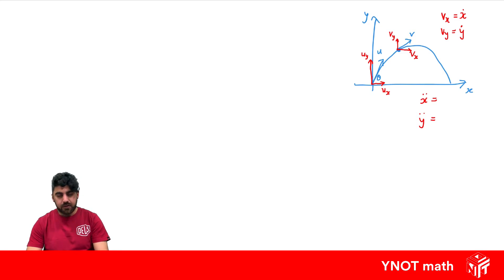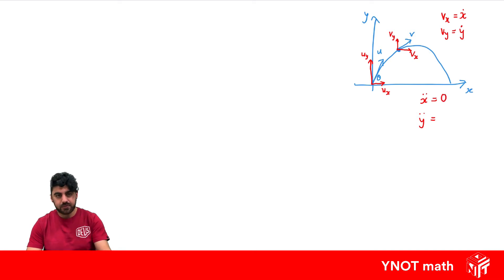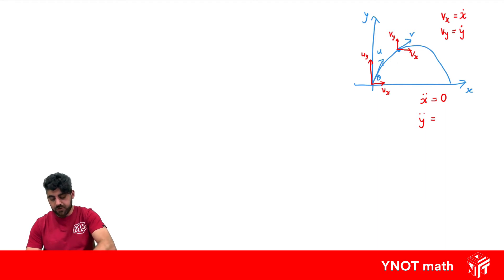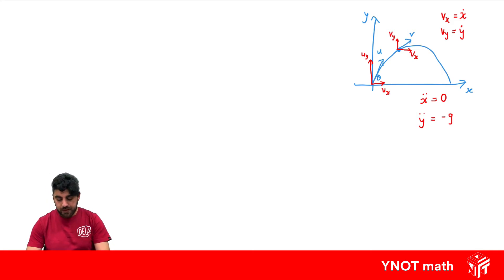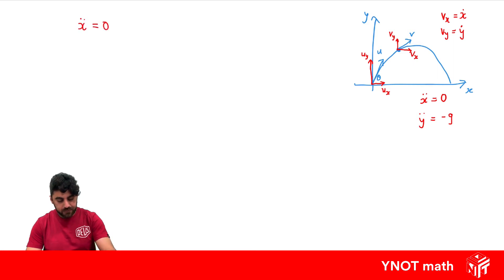With no resistance in the x direction, x-double-dot is going to be zero because there's no drag. But in the y direction, we've got acceleration due to gravity acting downwards, so it's going to be minus g. We're going to start off with these two equations: x-double-dot equals zero, and y-double-dot equals minus g.